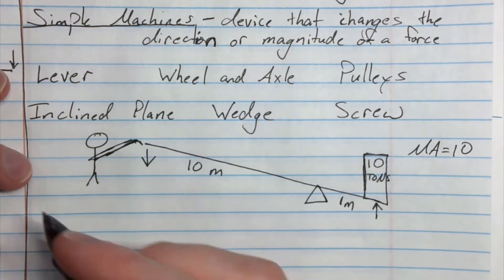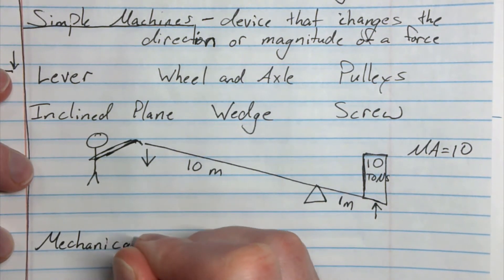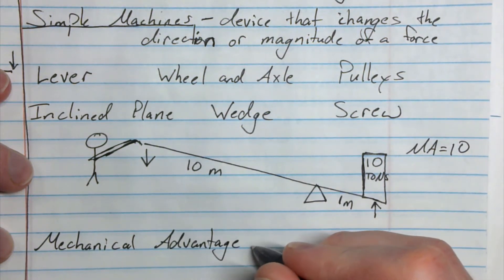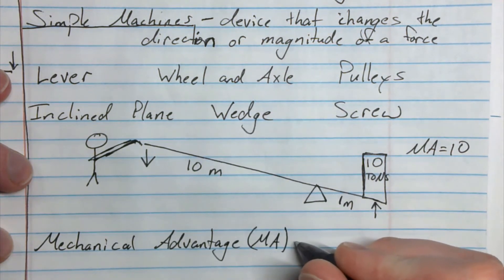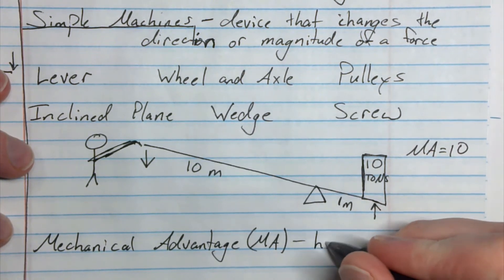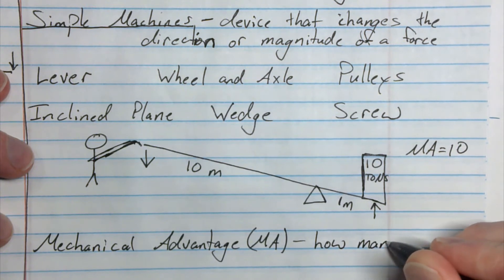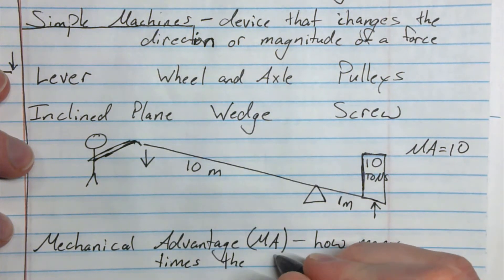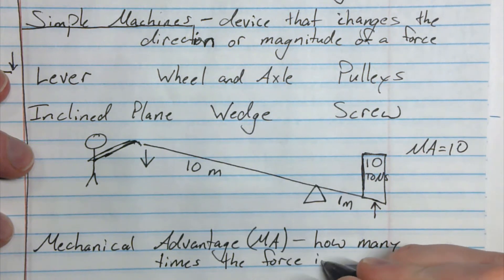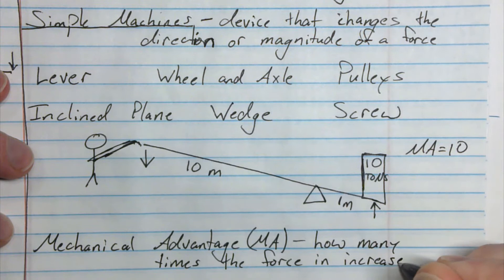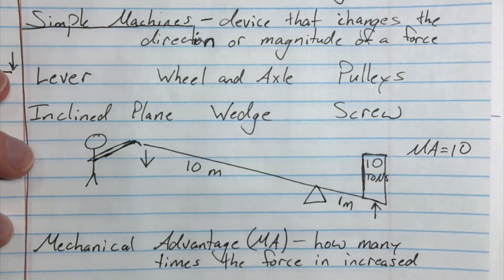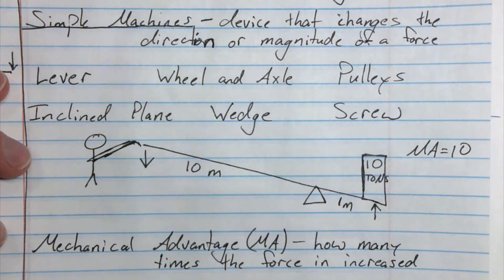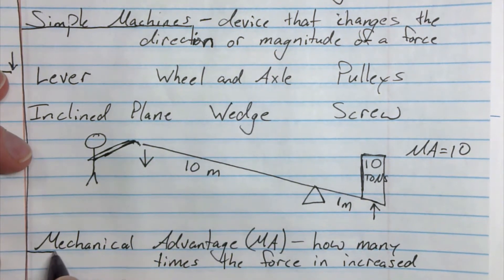Let's write in mechanical advantage, and we're going to put in parenthesis MA. So mechanical advantage: how many times the force is increased. In this case up here, it multiplied my force 10 times, so my mechanical advantage is 10. Pretty straightforward.